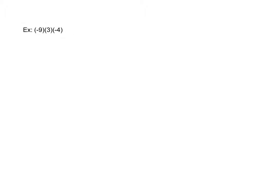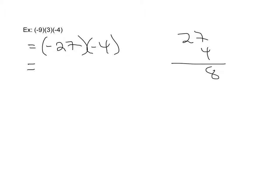Here I have a second example. I could use associative or commutative properties to rearrange, but I'm going to just go left to right. Negative 9 times positive 3 is going to get me negative 27, because a negative times a positive is always going to get you a negative answer. Now negative 27 times negative 4 — I'm multiplying two negatives so I know my answer is going to be positive. I still do the math of 27 times 4, and I get 108. My answer is positive because I'm multiplying two negatives together.